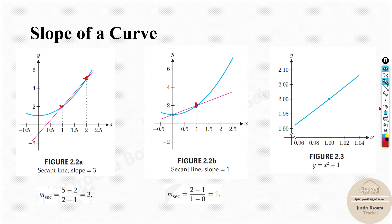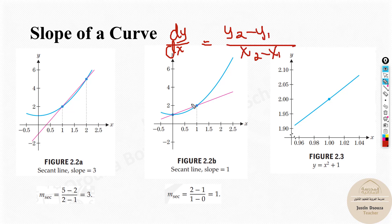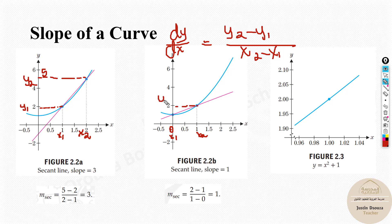The slope formula is dy/dx = (y₂ − y₁) / (x₂ − x₁). Over here, x₁ is 1 and y₁ is 2; x₂ is 2 and y₂ is 5. You just plug in the values: 5 minus 2 divided by 2 minus 1. Same thing on the other figure — x₁ is 0, y₁ is 1, x₂ is 1, y₂ is 2, so y₂ − y₁ = 2 − 1, x₂ − x₁ = 1 − 0. Substitute and you will get the answer.